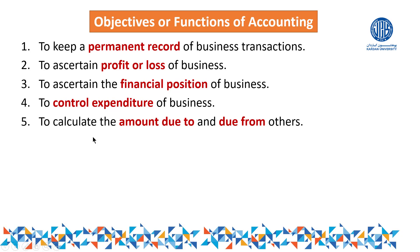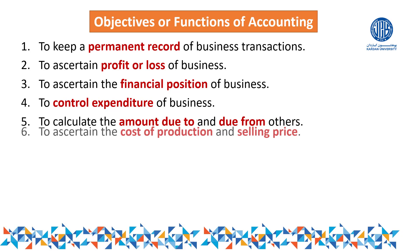Number five: to calculate the amount due to and due from others. Due to means how much we have to pay to others. For example, if you purchased a machine from Ali and promised to pay in the future, accounting shows how much you owe Ali. Due from means how much others should pay you — for example, if you sold a machine to Mahmoud and he promised to pay later.